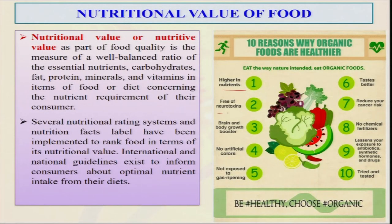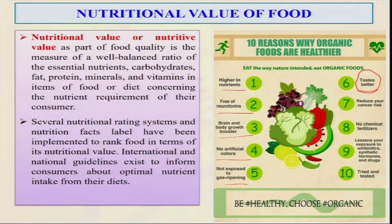Nutrients help in immunity development and boosting our defense mechanism. If we see why people are preferring organic food, especially fruits and vegetables, compared to conventionally grown crops — generally it is known to be higher in nutrients, free of neurotoxins, it helps the brain and body, there is no artificial colour in organic food, not exposed to gas ripening, and people are saying that organoleptically it tastes better and reduces the risk of different types of diseases.